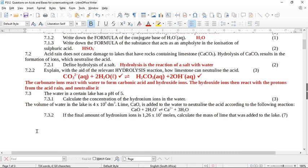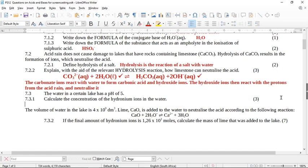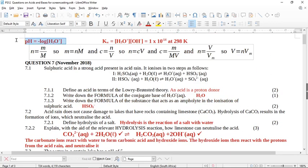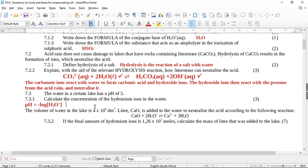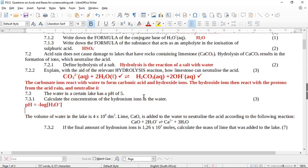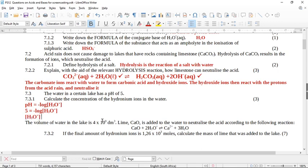So now for the lovely calculation. The water in a certain lake has a pH of 5. Calculate the concentration of the hydronium ions in the water. So we come and we take this formula. pH equals minus log H3O+. And we substitute here one mark for the formula, one mark for substitution. So 5 equals minus log.